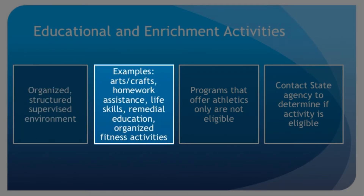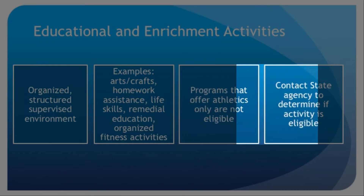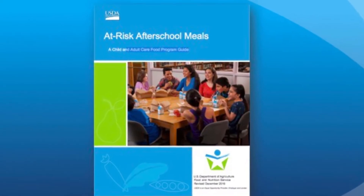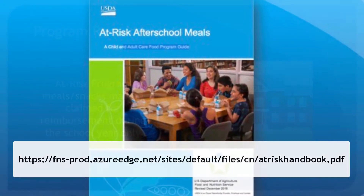Examples of eligible activities include arts and crafts, homework assistance, life skills, remedial education, and organized fitness activities. Programs that offer athletics only are not eligible. Organizations should contact the state agency to determine if the activities offered meet requirements. Additional information on program eligibility is in the USDA At-Risk After-School Meals Program Handbook.